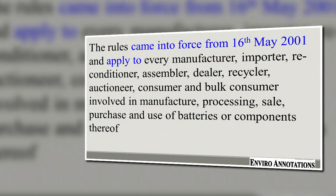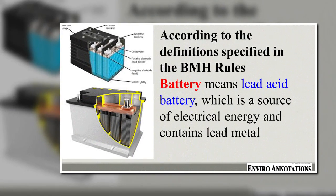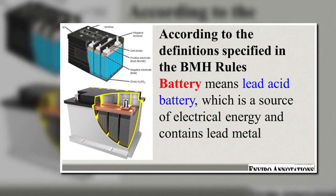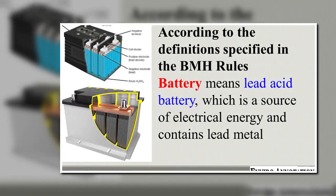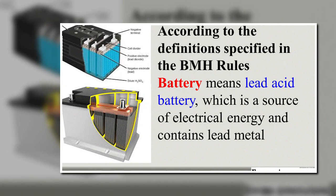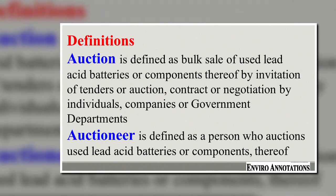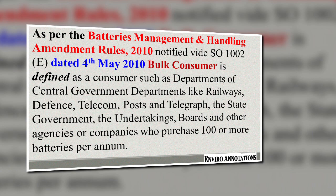According to the definitions specified in the BMHR, battery means a lead acid battery which is a source of electrical energy and contains lead metal. Auction is defined as bulk sale of used lead acid batteries or components thereof by invitation of tenders, auction contract, or negotiation by individuals, companies, or government departments. Auctioneer is defined as a person who auctions used lead acid batteries or components thereof.